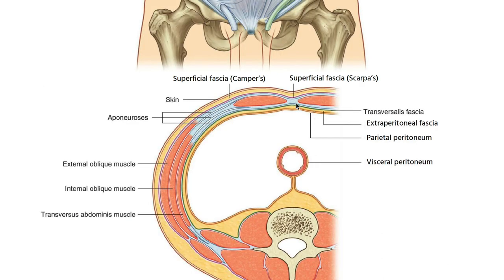For a final review of the cross-sectional diagram: from outside inward on the anterior side you have the skin, Camper's fascia, Scarpa's fascia, then the aponeuroses of the external oblique, internal oblique, and transversus abdominis muscles, followed by the transversalis fascia and the parietal peritoneum. The posterior arrangement of the muscles will be discussed in more detail in the next video.